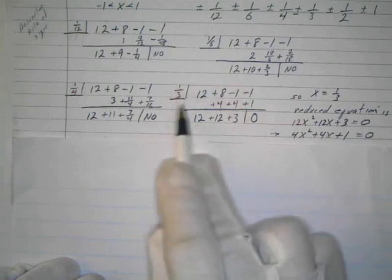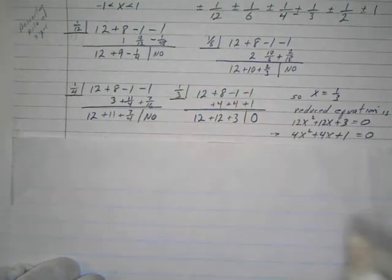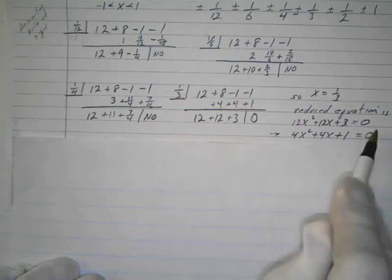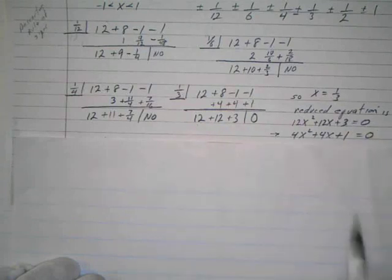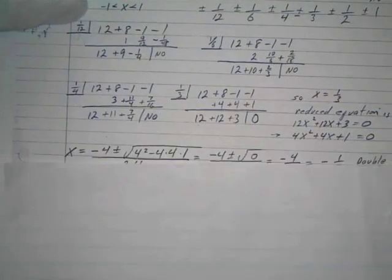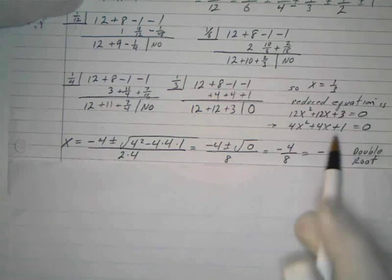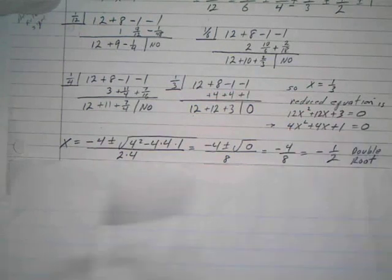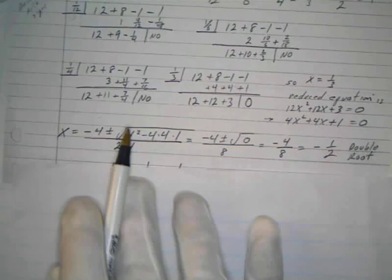So 1/3 is one of my roots. This is the reduced equation: 12x² + 12x + 3. I set that equal to zero. I can divide everything by 3 since I'm just looking for the roots. That gives me 4x² + 4x + 1. I'm going to use the quadratic formula. a is 4, b is 4, c is 1.